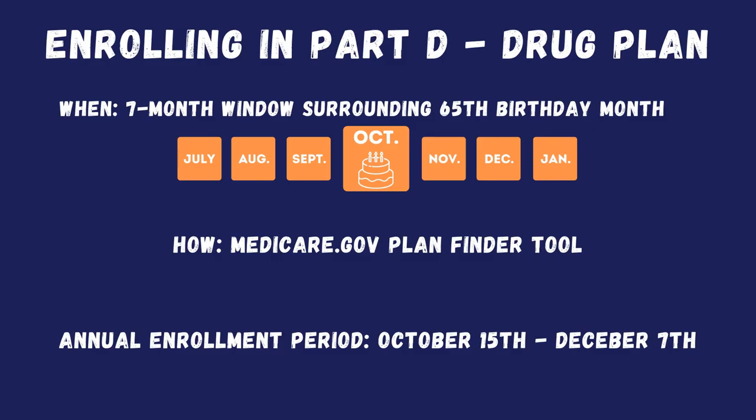Now that John is enrolled in Part A and B, and we've determined that original Medicare is the best option for him, the next step is enrolling in a Part D prescription drug plan. John gets the same seven-month window to enroll. The best way to do that is Medicare.gov's plan finder tool — I have a whole video on how to use it, and it's what I use when I sit down with clients.